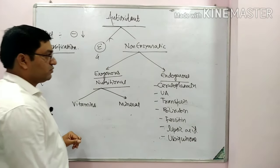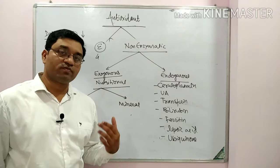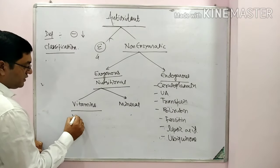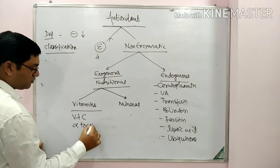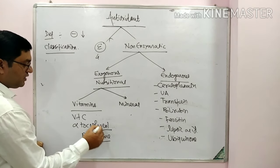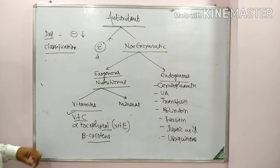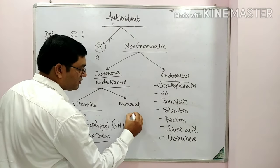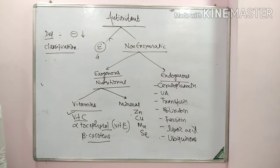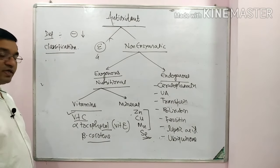The main vitamins that act as antioxidants include vitamin C (ascorbic acid), alpha-tocopherol (the active form of vitamin E), and beta-carotene (pro-vitamin A). The minerals that act as antioxidants are zinc, copper, manganese, and selenium. Zinc, copper, and manganese are present in superoxide dismutase; selenium is present in glutathione peroxidase.